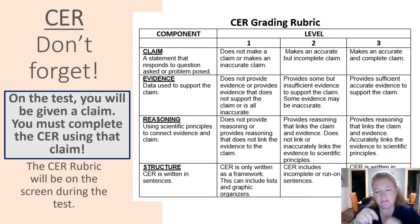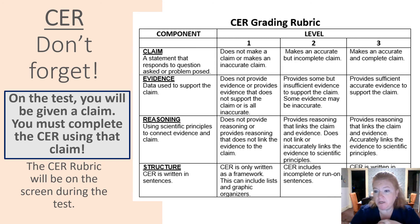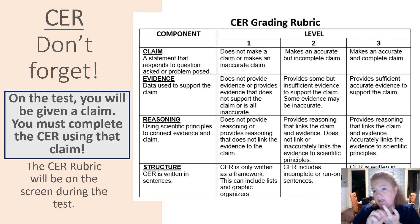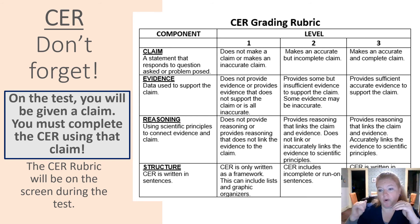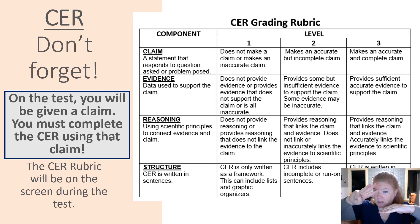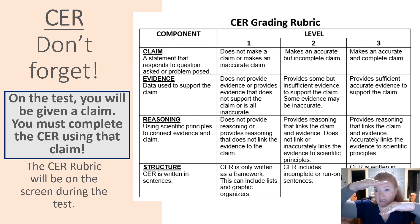Here's an example: Claim — 'Anatomy is amazing.' Then three pieces of evidence: anatomy teaches you how the body functions; it helps you understand when things aren't working correctly; and it prepares you for medicine-related fields like being a veterinarian, physical therapist, or doctor. Then reasoning restates the claim: 'For these reasons, anatomy is amazing.' Claim — evidence in the middle — reasoning. A sandwich.